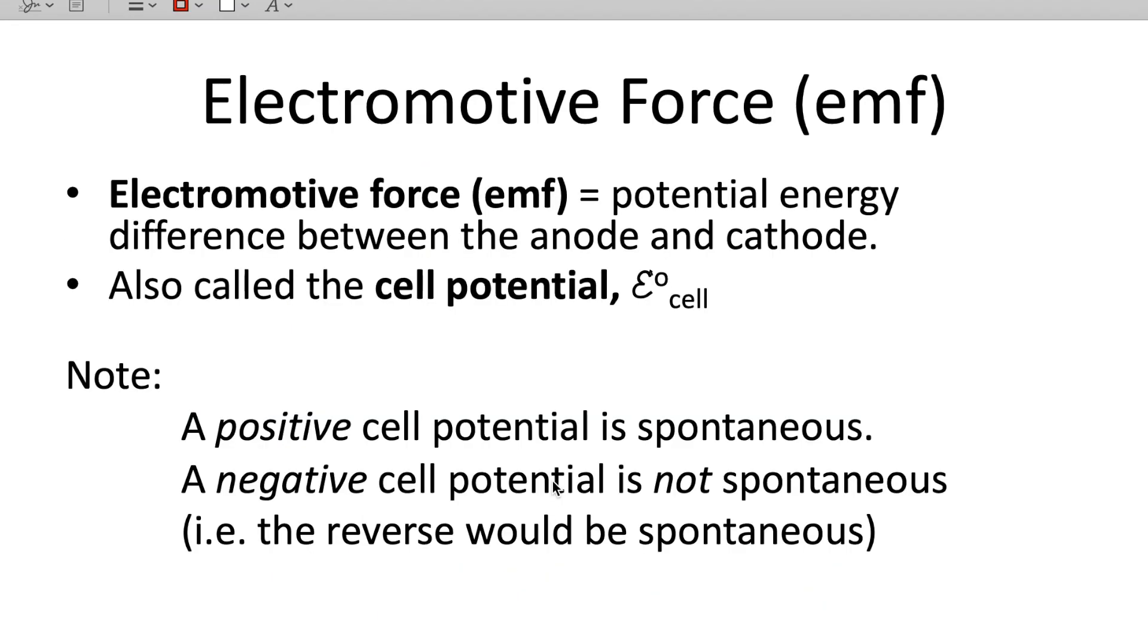The next thing we're going to talk about is electromotive force, or EMF. This is a potential energy difference between the anode and the cathode, and it's also called the cell potential. And so there's this little symbol that we use. Your book makes a really nice one, like a curly QE, E° for the cell. This is the cell potential, or standard cell potential when it has this knot here. If we have a positive cell potential, it's spontaneous. If we have a negative cell potential, it's not spontaneous. In other words, the reverse would be spontaneous. And now I've started talking about spontaneity, and that should remind you the cell potential is related to free energy.